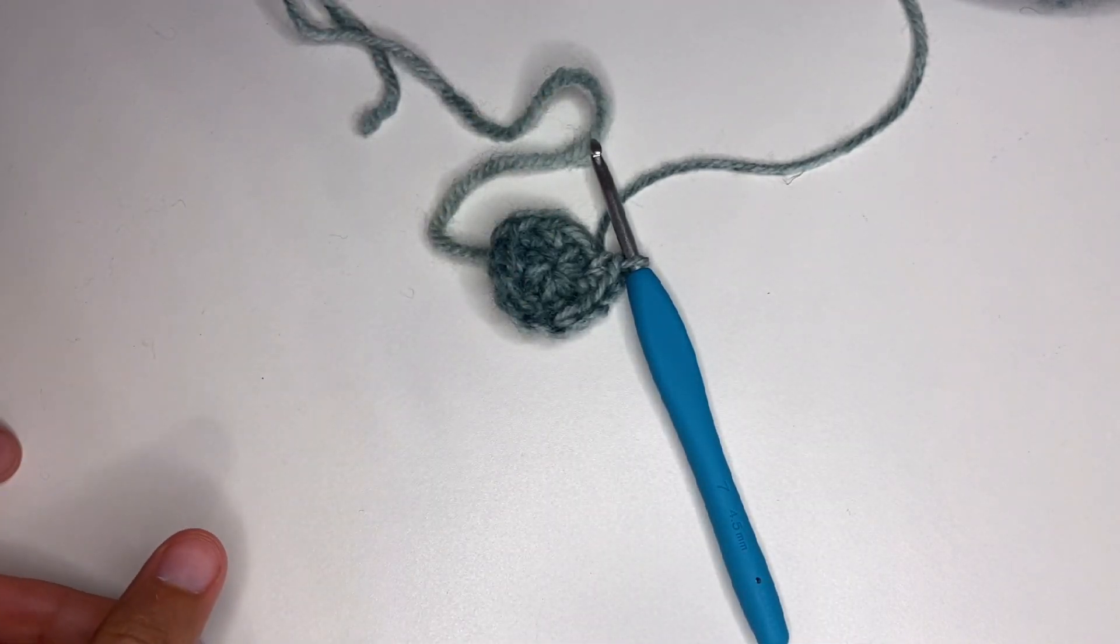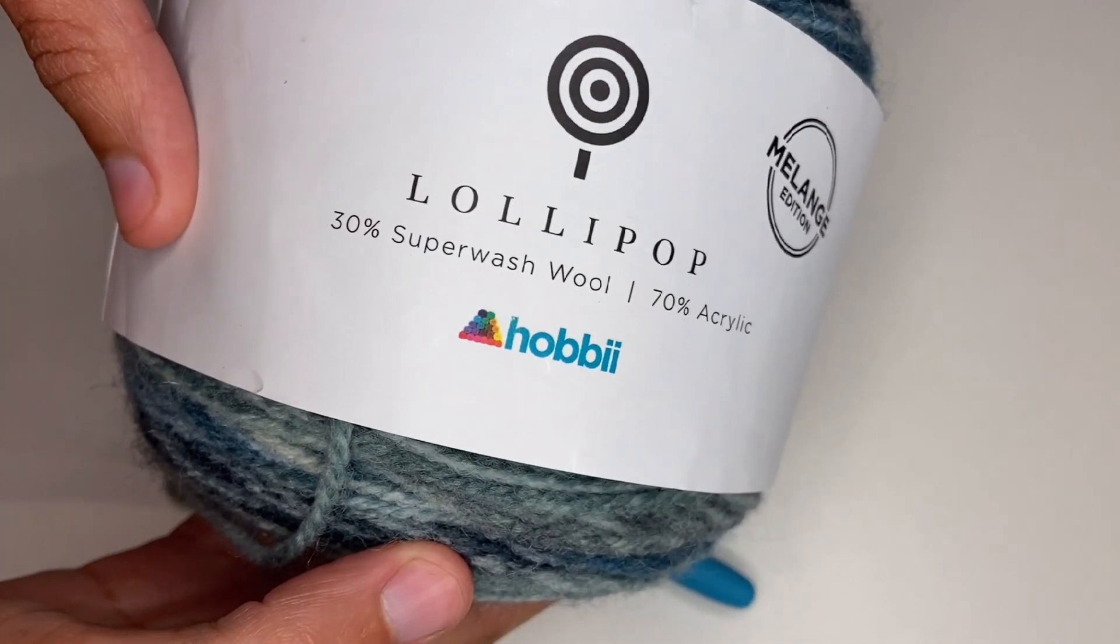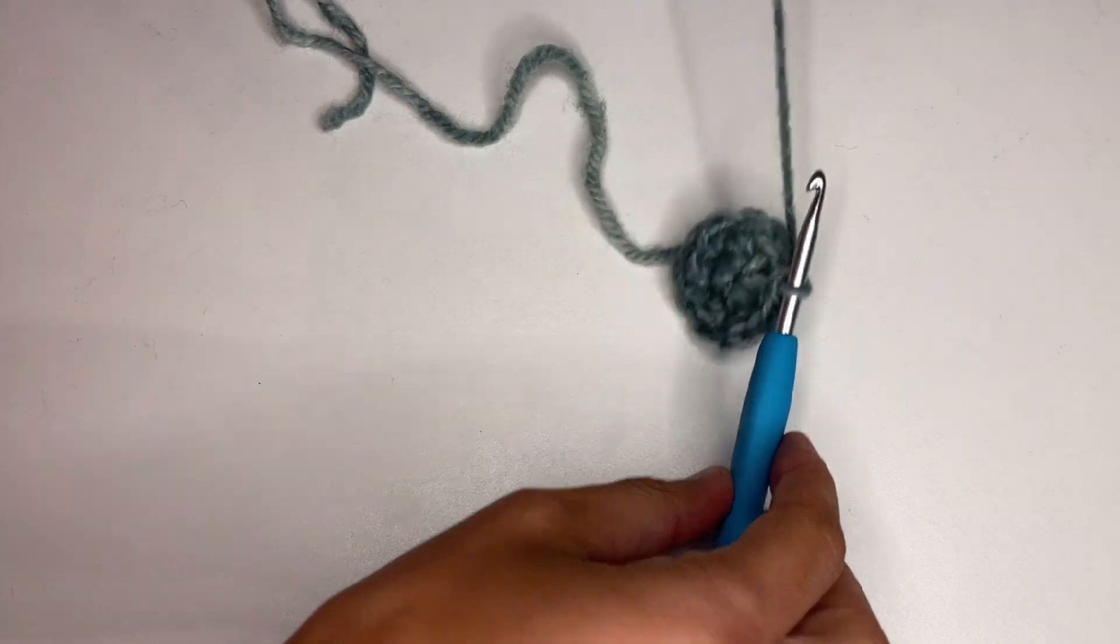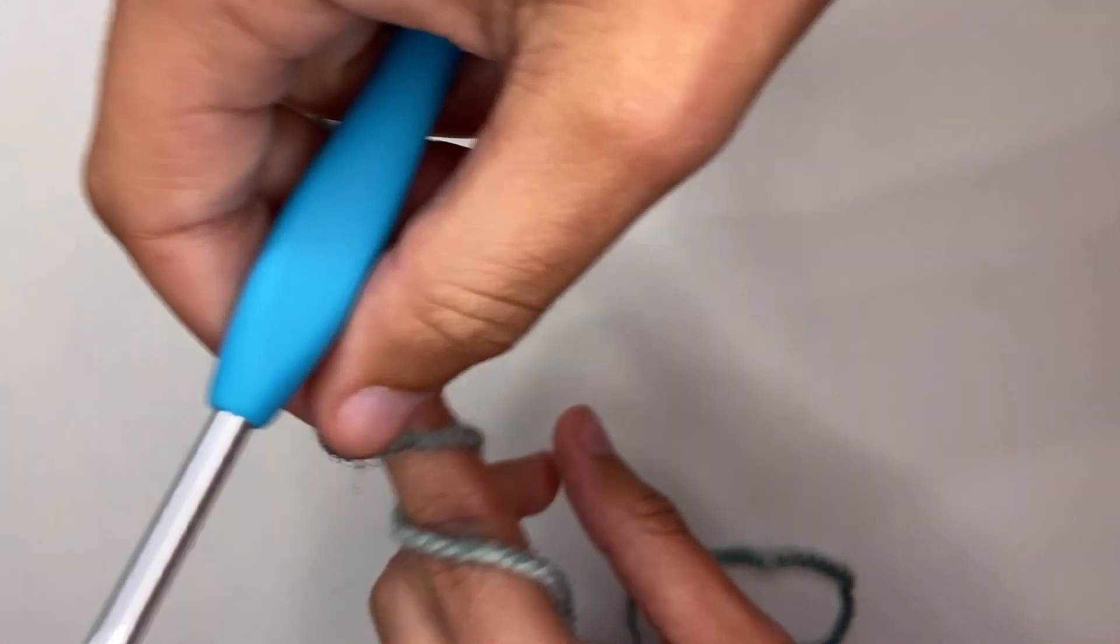How to crochet the magic circle. You will need a crochet hook and the yarn of your choice. This is the yarn I'm using today. The first thing you're going to do is locate the end of your yarn.